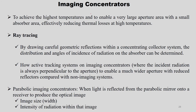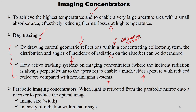Imaging concentrators are used to achieve the highest temperatures and enable a very large aperture area with a small absorber area, effectively reducing thermal losses at high temperatures. Ray tracing is very important here — by drawing careful geometric reflections within a concentrating collector system, the distribution and angles of incidence of radiation on the absorber can be determined. Active tracking systems on imaging concentrators are also important since incident concentration must always be perpendicular to the aperture to enable a wider aperture with reduced reflectors.